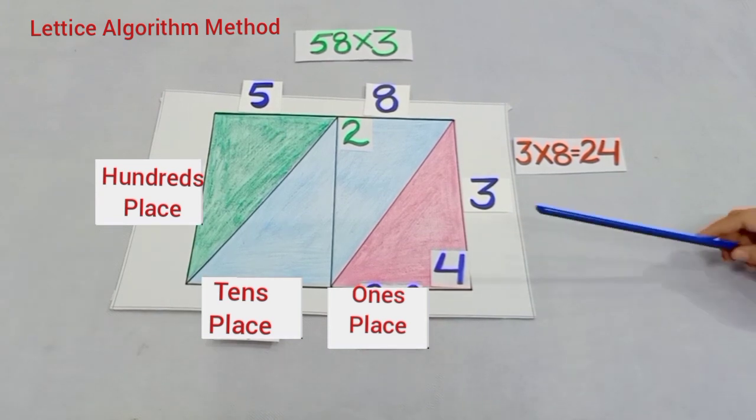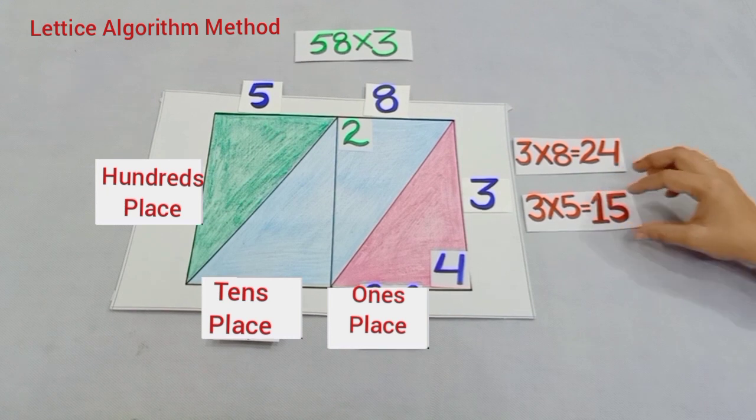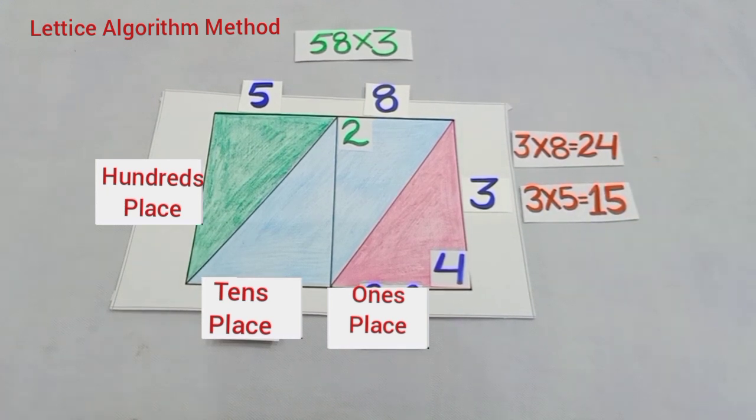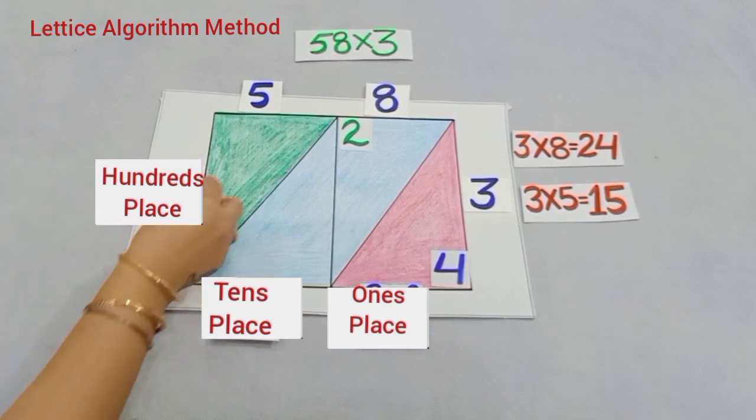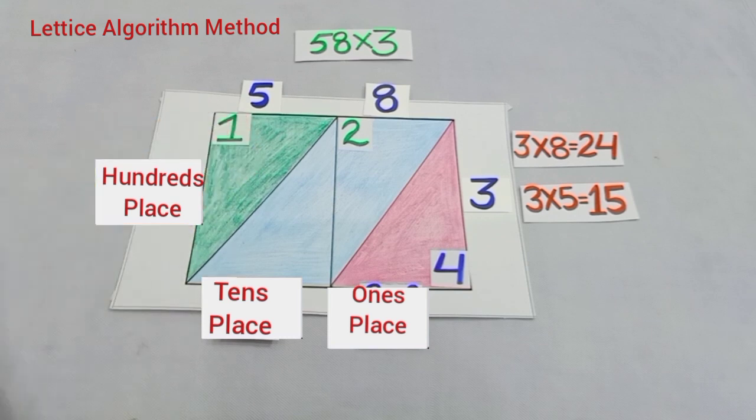Now, we will multiply three by five and we know three fives are fifteen and now we will write fifteen here like this. Firstly, we will write one here and five here.